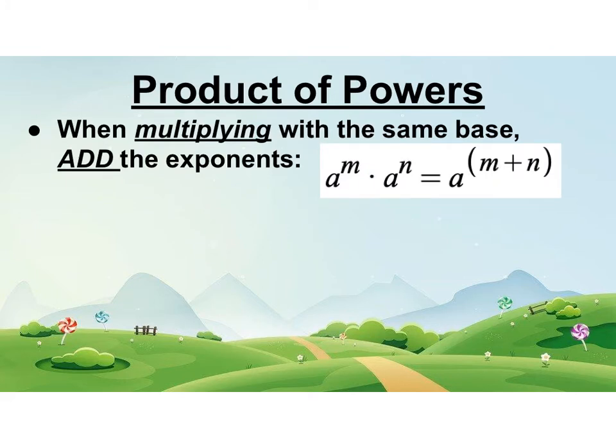The first one is called the product of powers. Now you don't need to remember the names of them but the names should make sense. Product means multiplication and then powers. So we're multiplying when we have exponents. So when you're multiplying with the same base, remember the base here is a and both of them are the same, you're gonna add the exponents. So it becomes a to the m times a to the n equals a to the m plus n.